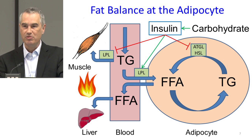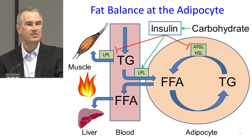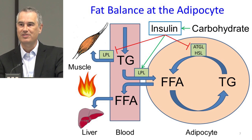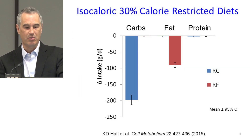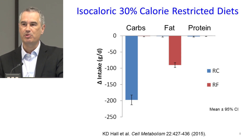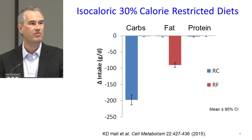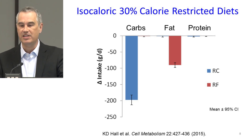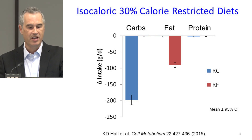We used our model to test that hypothesis and then design a clinical trial conducted at the NIH Clinical Center. We designed a pair of isocaloric, 30% calorie-restricted diets administered in random order — in one case all calorie restriction coming from carbohydrate-cutting (RC), and in the other case all coming from a reduced-fat diet (RF).